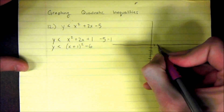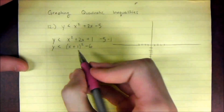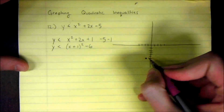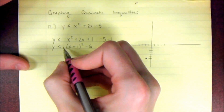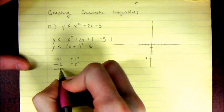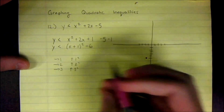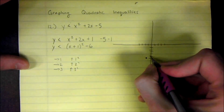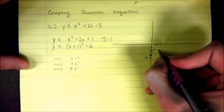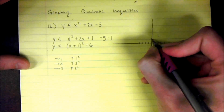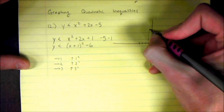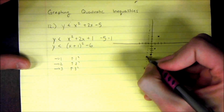Now I can go ahead and start graphing it. This is a shift to the left 1 and down 6, so that's my vertex at (-1, -6). I have just a 1 in front, so I go over 1 and up 1 squared, over 2 and up 2 squared, over 3 and up 3 squared. So over 1 up 1, over 2 up 4, over 3 up 9. Drawing my axis of symmetry at x = -1, I can reflect to get more points on the graph.